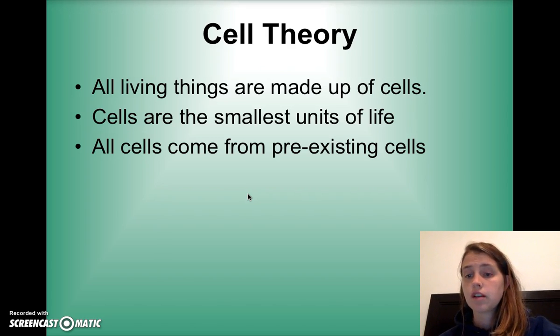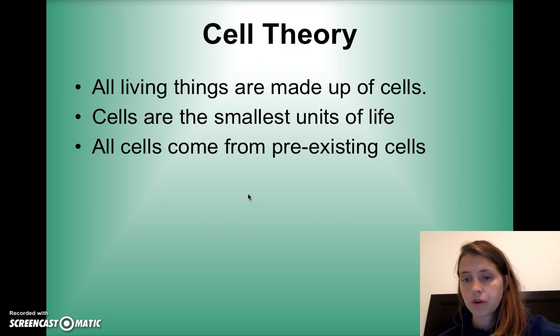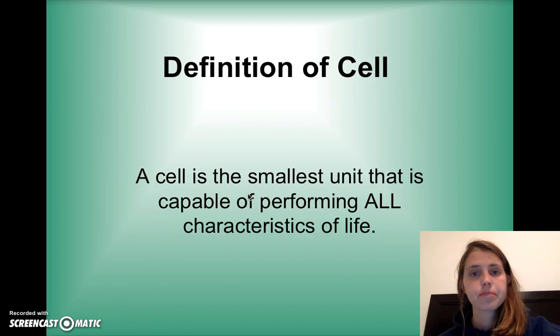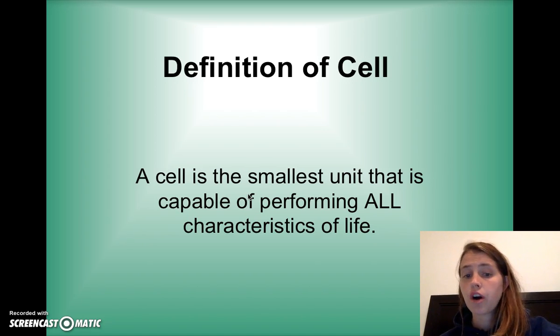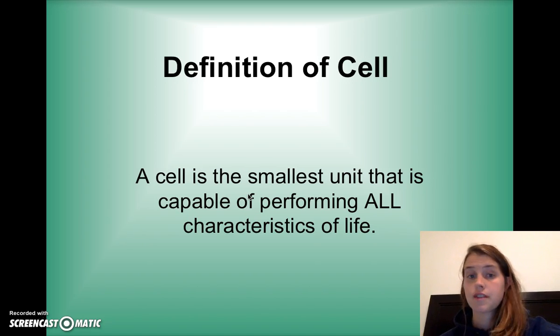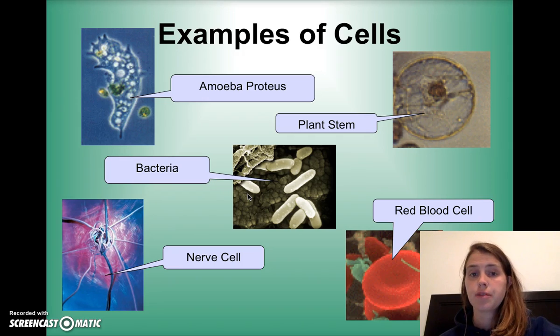A cell comes from a cell, over and over again. And the definition of a cell is the smallest unit that is capable of performing all characteristics of life — that's all seven that we talked about.